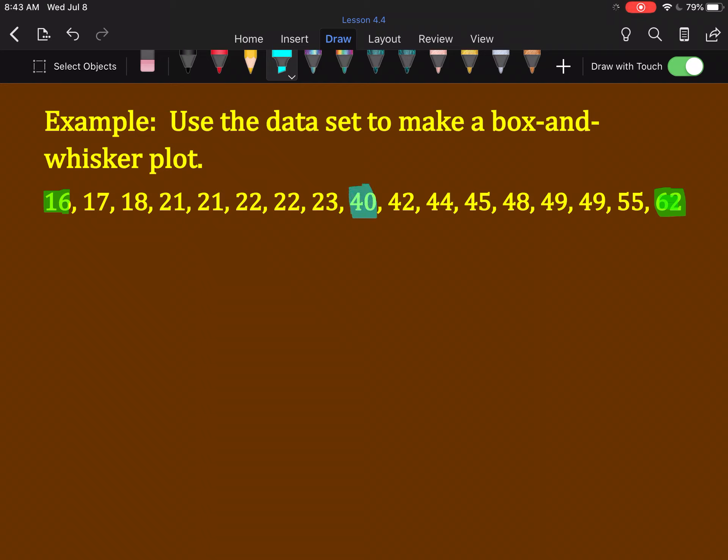How do we check that? Count how many numbers are on each side of it. Below 40, there are 8 numbers. Above 40, there are 8 numbers. That means we did it right.